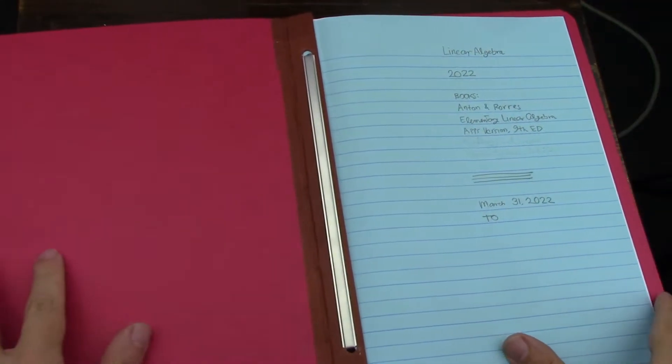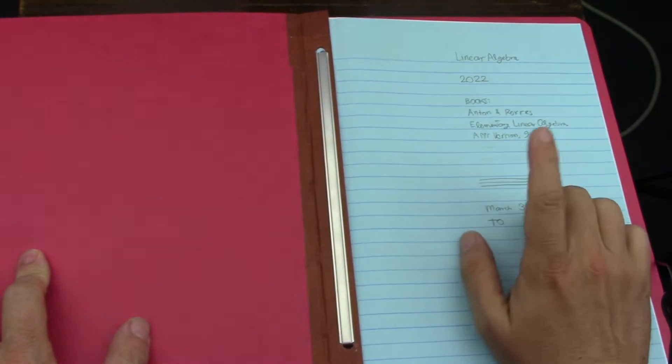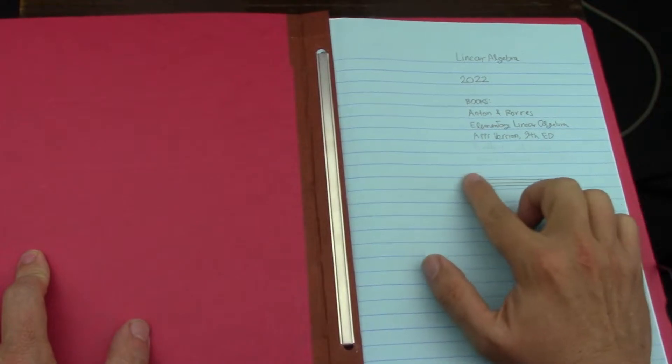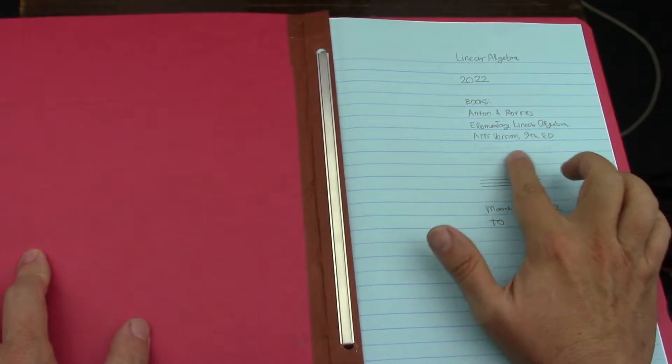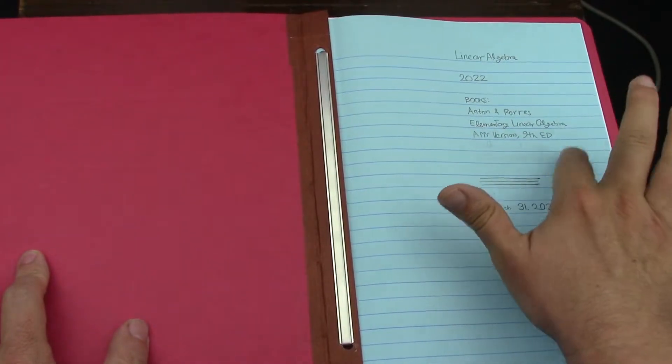But I want to finish Rosen, so I'm really focusing on that. I was doing linear algebra with the Friedberg et al theoretical linear algebra book. I stopped, I actually erased it out of here.